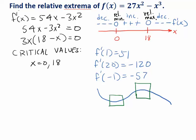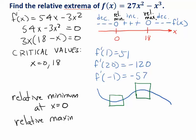So to summarize what this first derivative sign chart is telling us about the extrema, we have a relative minimum at x equals 0, and a relative maximum at x equals 18.